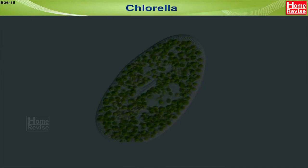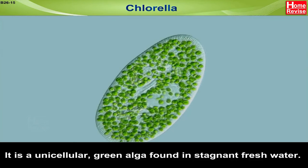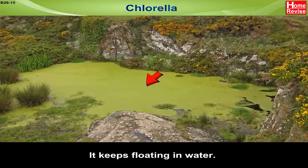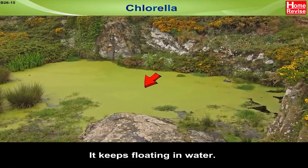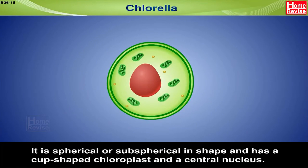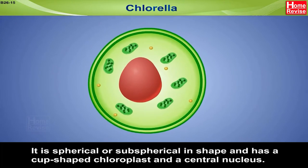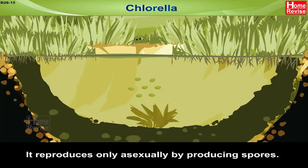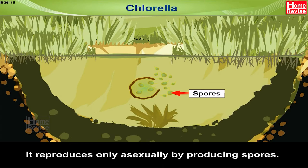Chlorella is a unicellular green alga found in stagnant fresh water. It keeps floating in water. It is spherical or subspherical in shape and has a cup-shaped chloroplast and a central nucleus. It reproduces only asexually by producing spores.